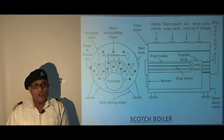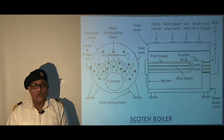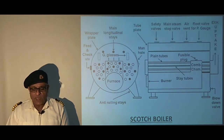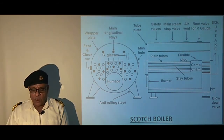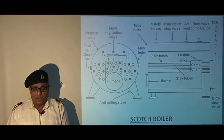Plain tubes and stay tubes are in the ratio of 3 to 1. These tubes carry flue gases from the combustion chamber to the boiler uptake and support the boiler front tube plate and combustion chamber front plate.